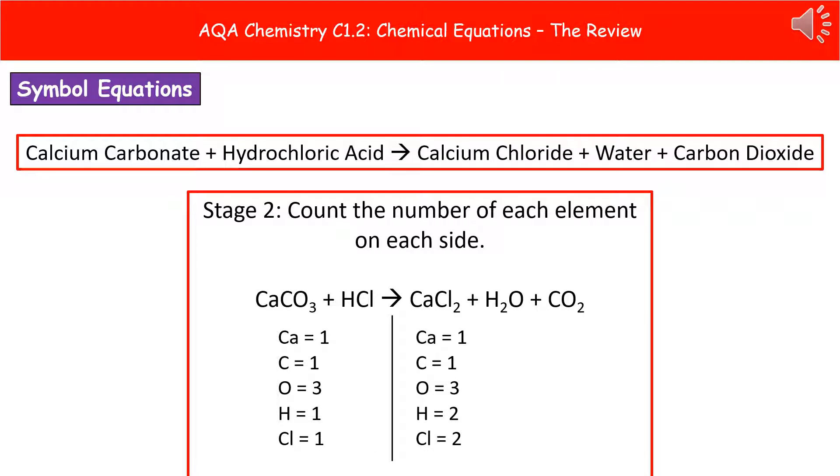Second stage, then, is we need to count the number of each element on each side. One of the easiest ways I find to do this with my classes is use the arrow as your dividing line and put a line down, and then literally write down the symbols for each element in the same order on both sides of that line, and then count up how many you've got, just like I've done in the example at the bottom there.